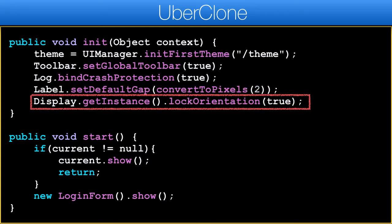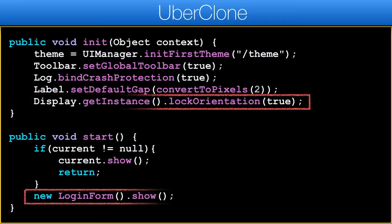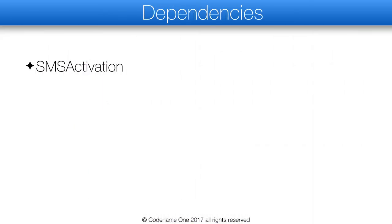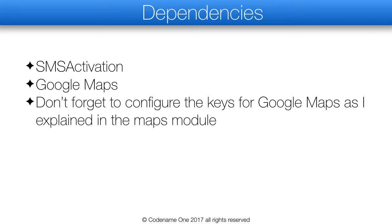Next, we lock the phone into portrait mode, though this isn't the only thing we need for this. Finally, we show the login form, which we'll get to in the next part. We need to install and configure some cn1lib extensions. For the first part, we'll need SMS activation for the UI of the country picker. We also need Google native maps for map support. Don't forget to set up Google Maps in the project as mentioned in the maps module.